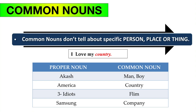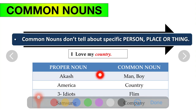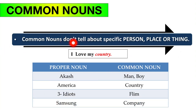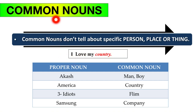Let's talk about common nouns. First, recall proper nouns — they are names specific to a particular person, place, or thing. On the other hand, common nouns do not refer to any specific person, place, or thing. For example, in the sentence 'I love my country,' the word 'country' is a common noun.